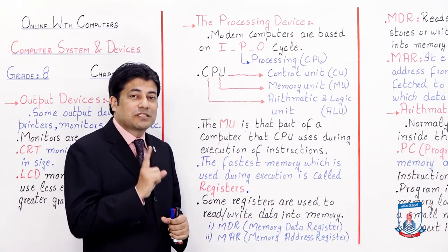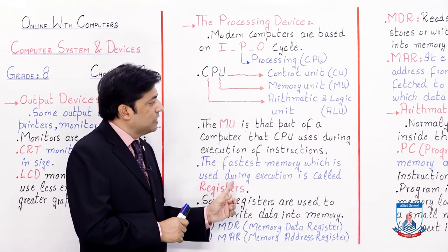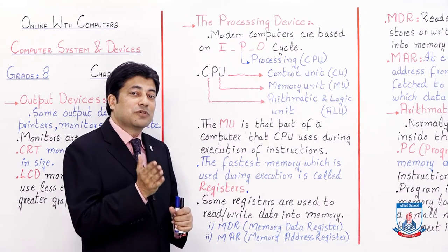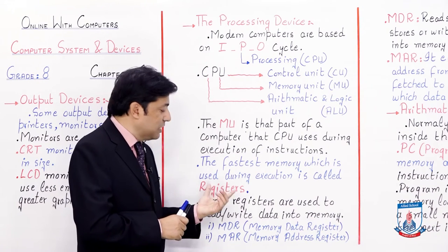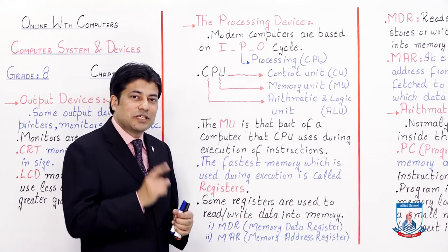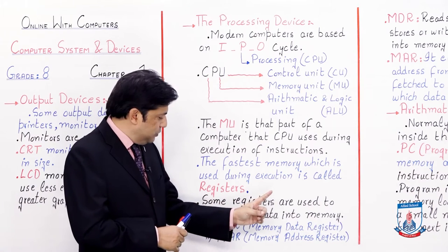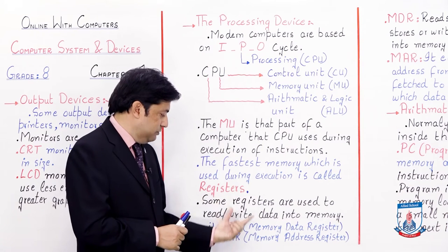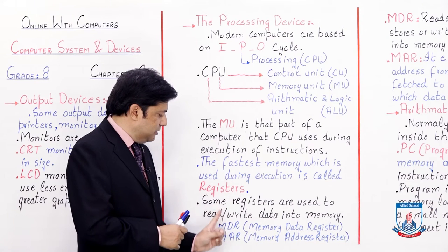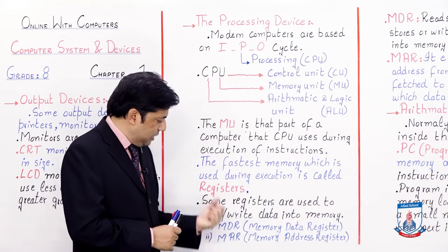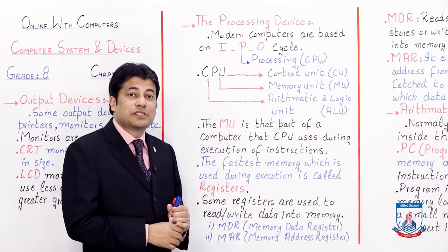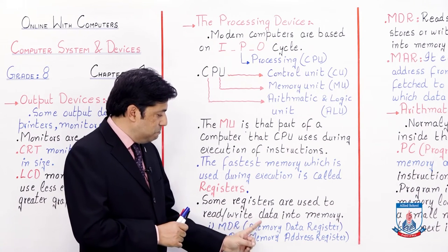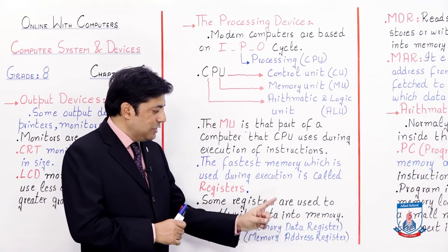Registers are inside the CPU and nearer to the CPU. Some registers are used to read or write data into memory. Those registers are called MDR and MAR. Students should remember their abbreviations as they can be asked in exams. MDR is Memory Data Register and MAR is Memory Address Register.